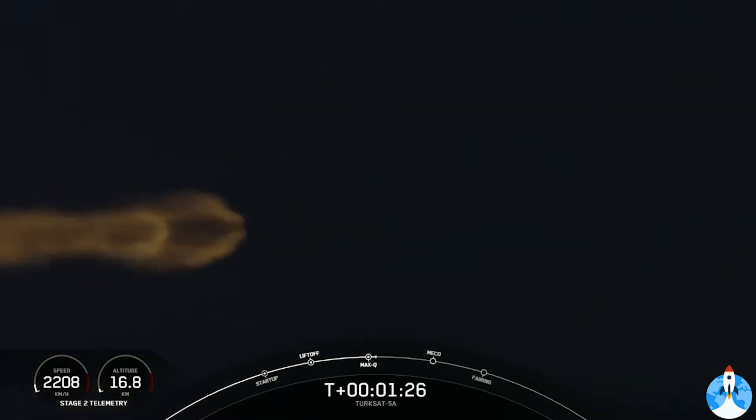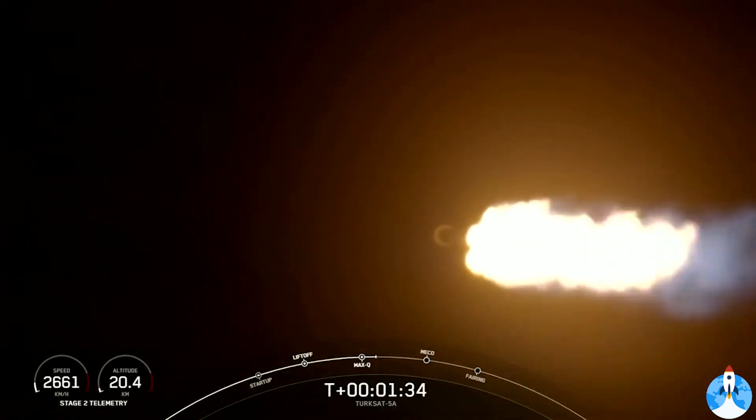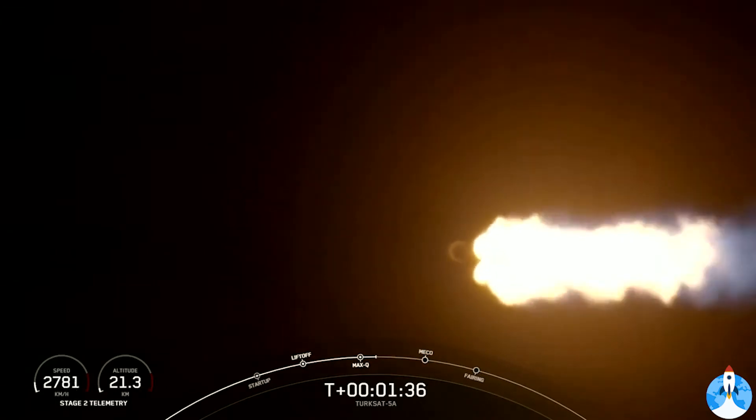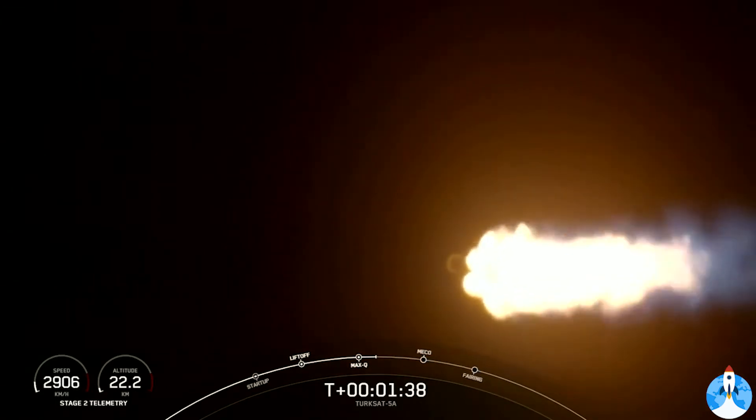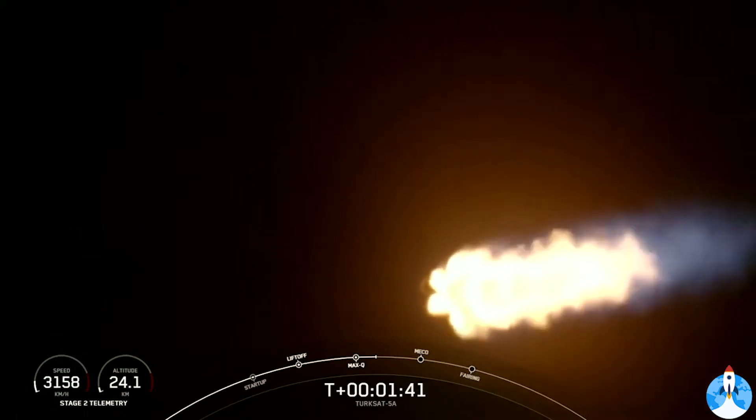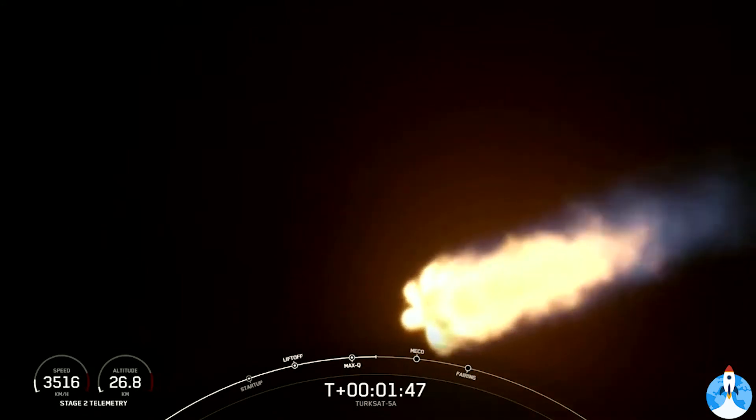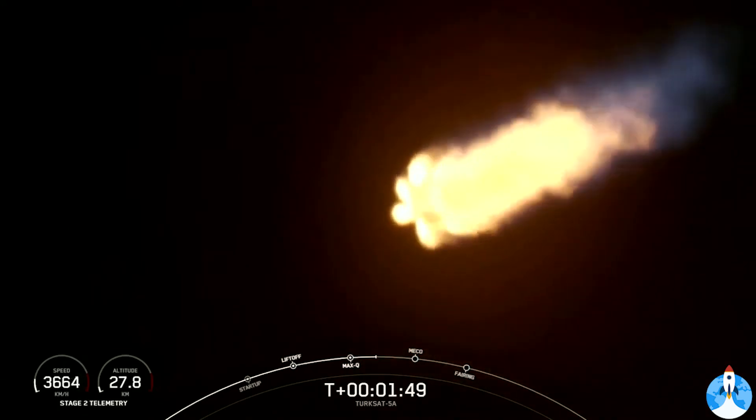Everything is looking good with the first stage's trajectory. Next, we're going to start our MVAC chill. This is going to help us prepare for the next three major events. They occur one after another. The first one, those nine Merlin 1D engines are going to cut off. That's known as MECO or main engine cutoff. Right after that, the first and second stage will separate, and then the Merlin vacuum engine on the second stage will turn on. That's known as SES-1.